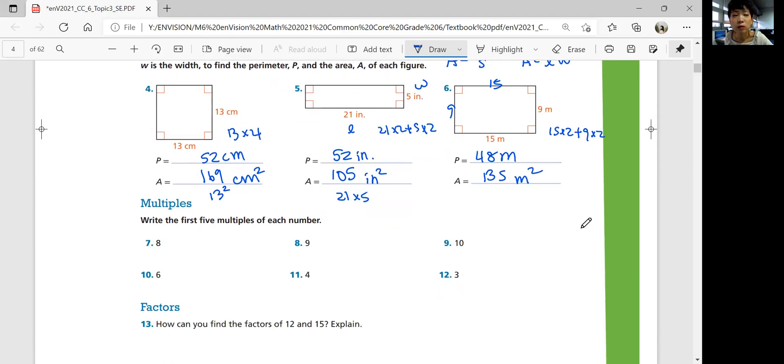Writing the first five multiples of each number. Multiples mean you have to multiply this number. Eight, the first five means you start with zero. If you do not multiply eight, you start with zero. Then eight times one is eight, eight times two is 16, eight times three is 24, eight times four is 32. That's how you find the first five multiples of a number.